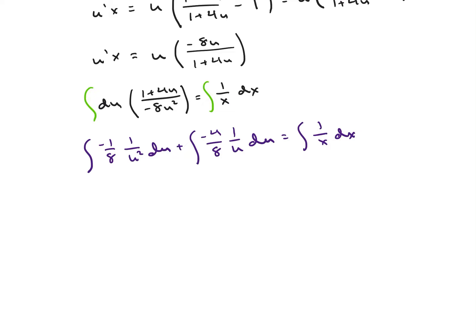So I'm going to get over here, I'll get negative 1 over 8 times 1 over u times negative 1 plus negative 1 half times integral of 1 over u, which is ln of u. I'm going to get that equal to ln of x plus some arbitrary constant.